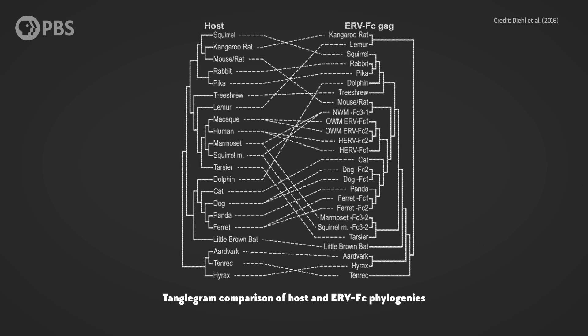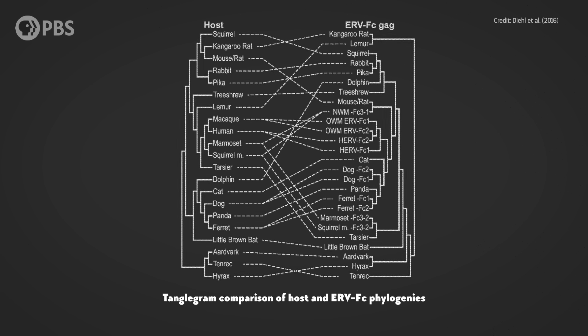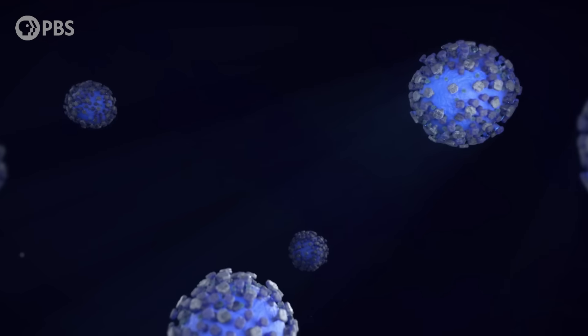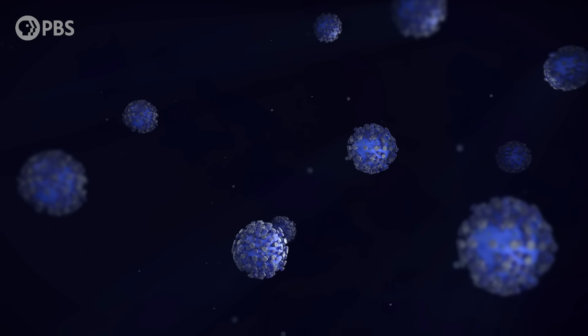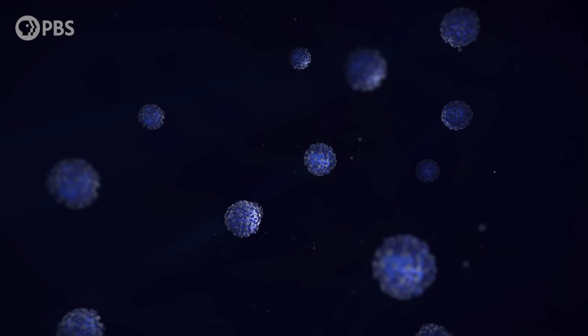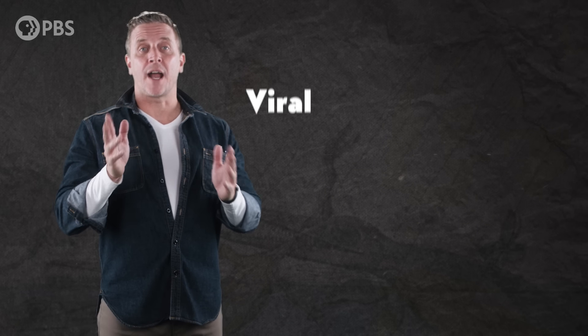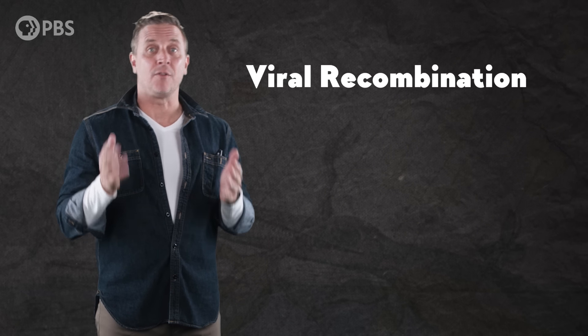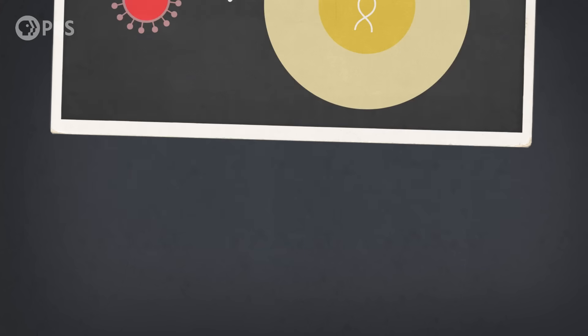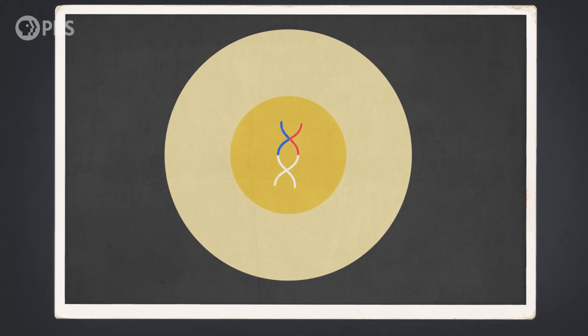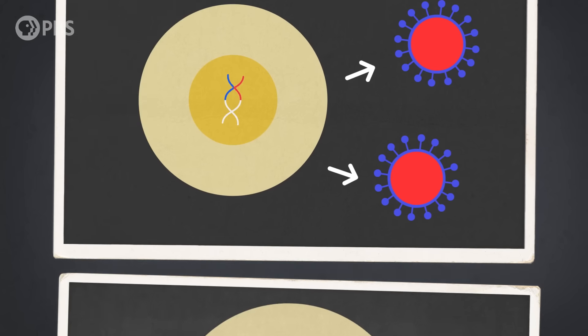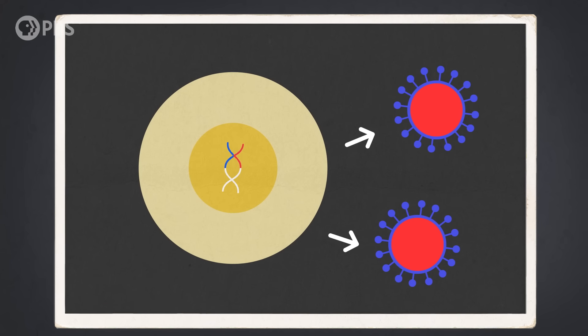But one of the reasons that the virus was so successful at hopping between species may have been its ability to swap genes with other strains, and with other totally different viruses, over the course of the outbreak. This is known as viral recombination, and it can happen when two different viruses infect the same animal at the same time. This lets them splice elements of their genomes together as they replicate within the same cell, and it happens naturally all the time.